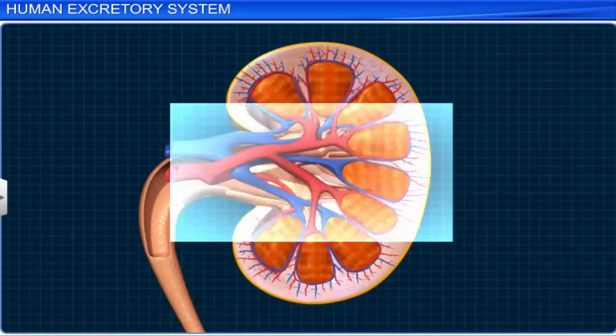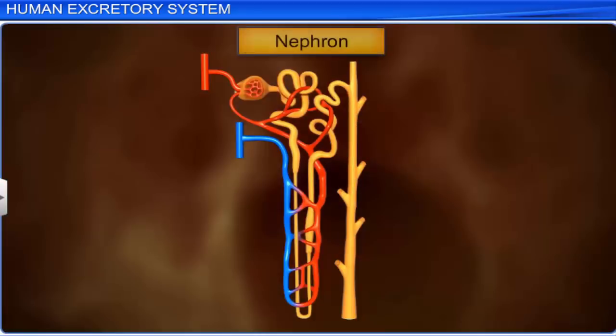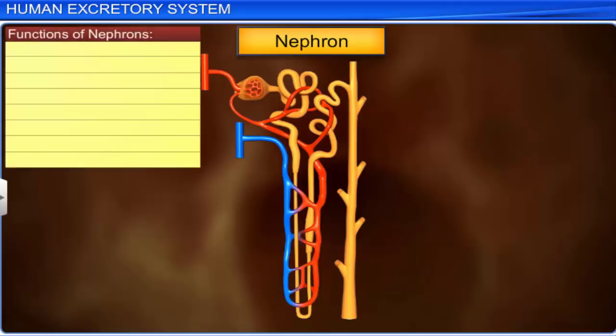Each kidney contains about a million nephrons in the cortical region, which are the basic functional units of the kidney. The nephrons filter nitrogenous wastes and excess salts from the blood, and help in body fluid regulation and urine formation.